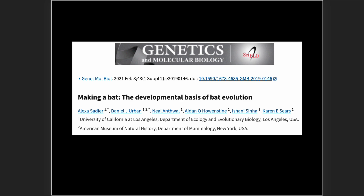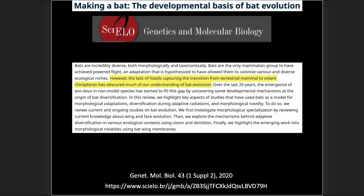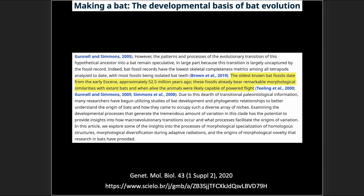Here's a review paper, 'Making of a Bat,' by authors from UCLA and the American Museum of Natural History in New York City. It states: 'The lack of fossils capturing the transition from terrestrial mammal to flying bat has obscured much of our understanding of bat evolution. The oldest known bat fossils date from the early Eocene, approximately 52.5 million years ago. These fossils already bear remarkable morphological similarities with extant bats, and when alive, the animals were likely capable of powered flight.'